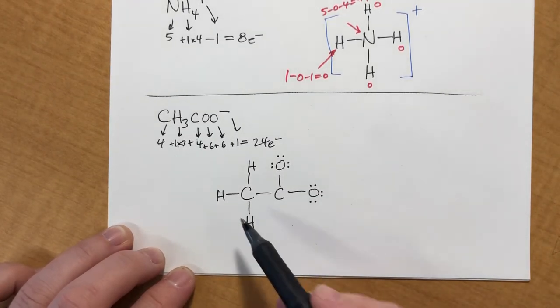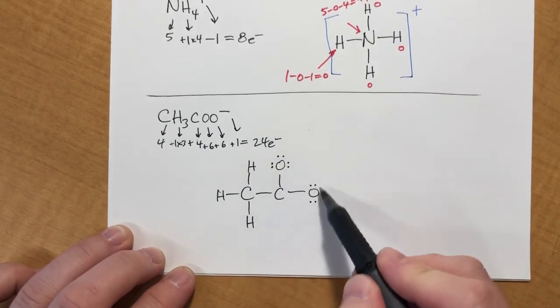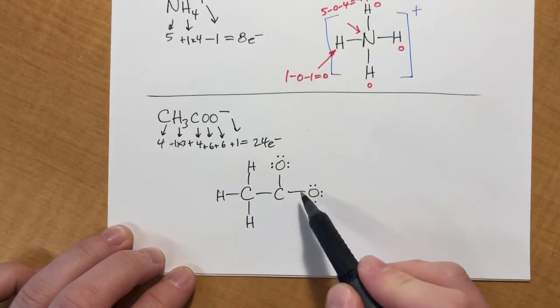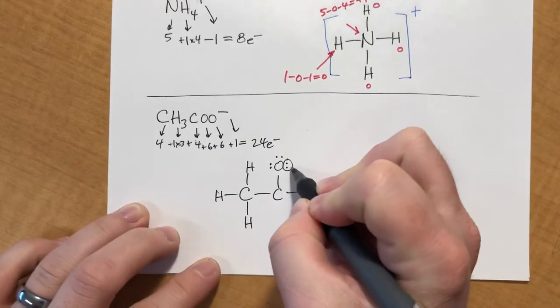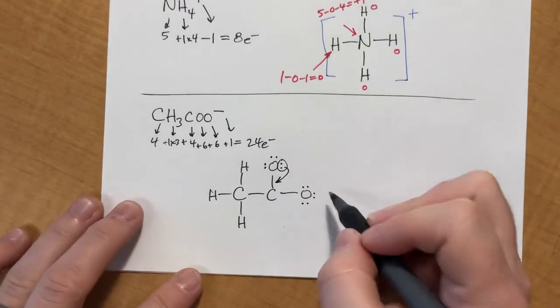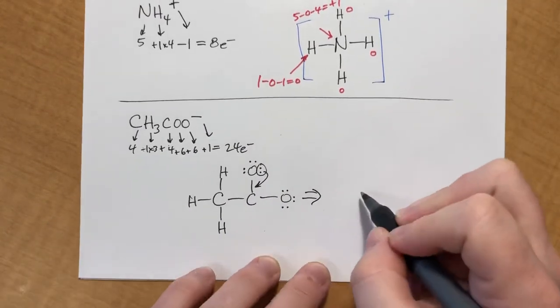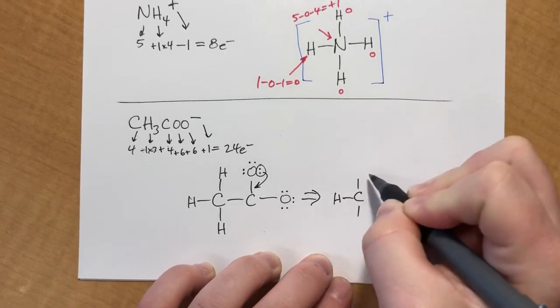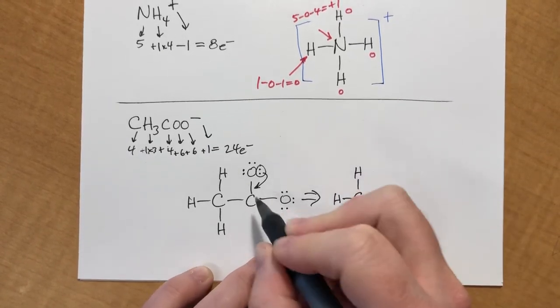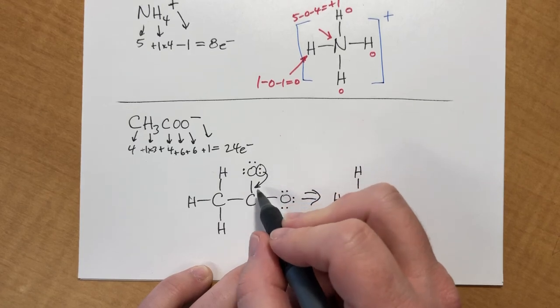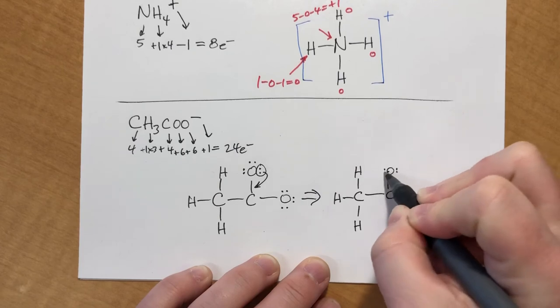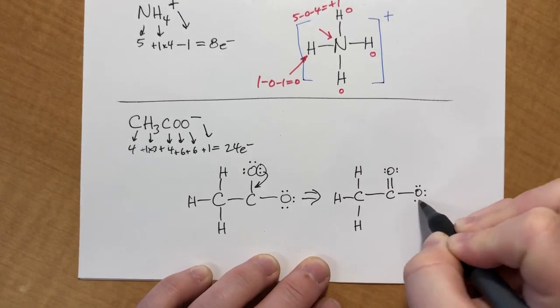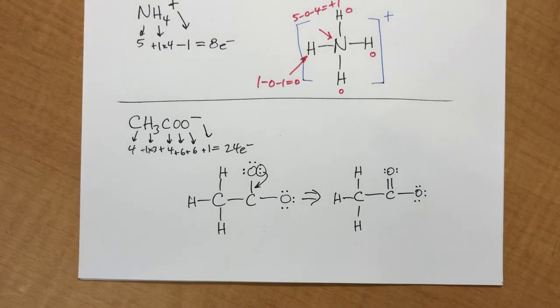If we check for octets, the hydrogens are happy, the oxygens are happy. This carbon has two, four, six, eight, but this carbon only has two, four, six. So we need to form a double bond. It doesn't actually matter which oxygen you pick, because they're essentially equivalent. I'm gonna pick this one because I can. I'm gonna rewrite all this. On quizzes or exams, if you're working in pencil, you can literally just erase that and draw the double bond. That's totally fine. I am trying to, for the sake of looking back at my notes, trying to indicate what choices were made and how I decided them.